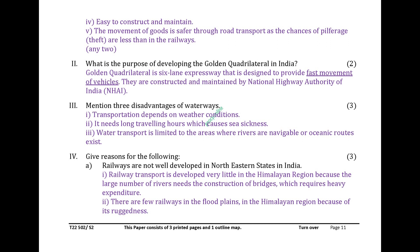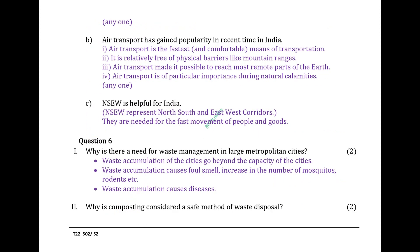Give reasons for the following. Railways are not well developed in northeastern states in India because railway transport development in the Himalayan region requires construction of a large number of bridges over rivers, which requires heavy expenditure, and there are few railways in flood plains due to the region's ruggedness. Air transport has gained popularity in recent times because it is the fastest and most comfortable means of transportation, relatively free of physical barriers like mountain ranges, can reach remote parts of the earth, and is of particular importance during natural calamities.